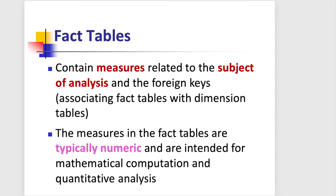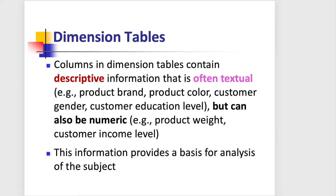For example, if the subject of our analysis is sale, one of the measures in the fact table can be the sales dollar amount. The dimension tables are those tables that provide usually descriptive information that can provide a basis for the analysis of our subject. For example, if the subject of analysis is sale, the sale amount can be calculated using different functions across various dimension columns.